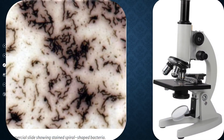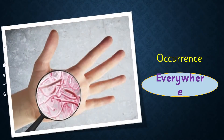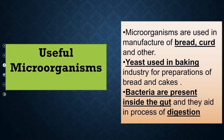Here you can see a microscope being used to study microorganisms. They are so small, but you can observe them and see their different shapes and structures. Their occurrence — they are present everywhere: on your hands, on your clothes, in your mouth, in your gut, everywhere. Then, what are useful microorganisms? Not all microorganisms are germs that cause diseases — there are some very friendly microorganisms which are very useful.